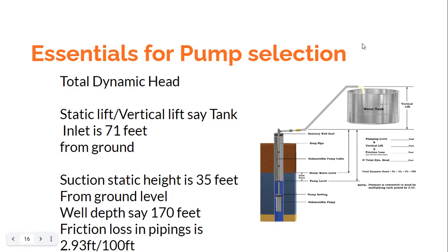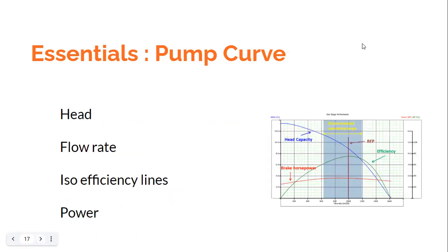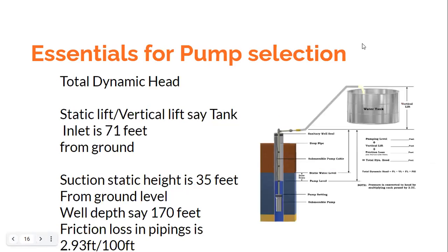If you take measurements in feet, total dynamic head will be in feet; if in meters of water column, you get meters of water column — use whatever units your country follows. This discussion about the system — vertical lift, pumping level, and frictional losses — is known in scientific terms as system characteristics.